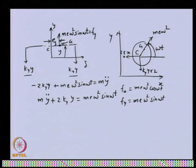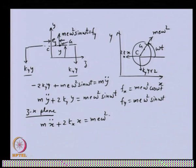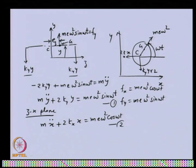On the same lines, drawing the free body diagram in the z-x plane, we obtain the equation of motion for x: m·ẍ + 2k_x·x = m·e·ω²·cos(ω·t). These are the first two equations of motion, obtained by giving independent motions in the y and x directions.